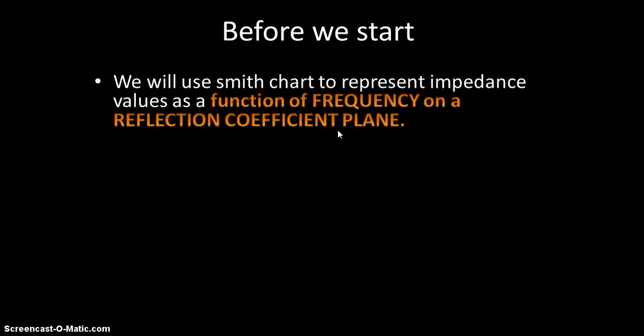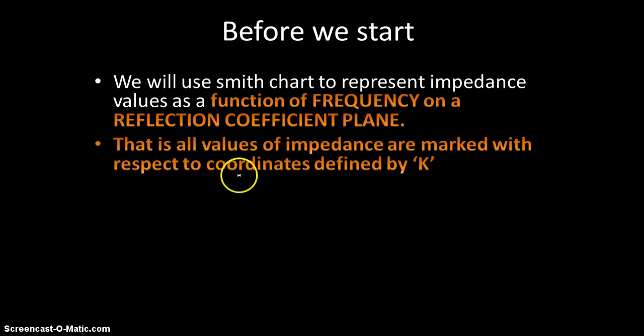Before we start I would like to say we are going to use Smith Chart to represent all possible values of impedance as a function of frequency on a reflection coefficient plane. That is all the values of impedance are marked with respect to the coordinates defined by the term K, which is your reflection coefficient.